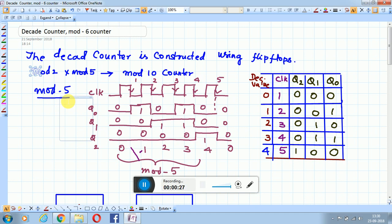A mod-5 counter is constructed using 3 flip-flops because 5 cannot be expressed as 2 power n. If n equals 1, it's mod-2. If n equals 2, it's mod-4. Since you need 5 counts, mod-2 and mod-4 are insufficient. You cannot take mod-2 because the count is less; you must take mod-8, which means n equals 3, giving 8 counts when only 5 are needed.